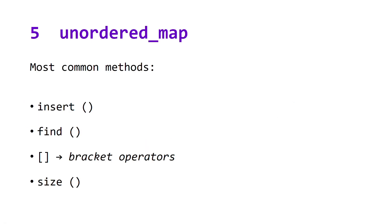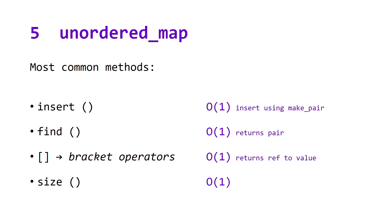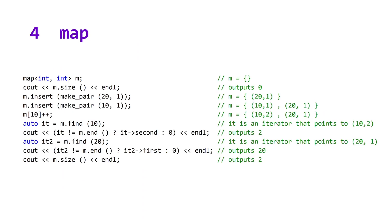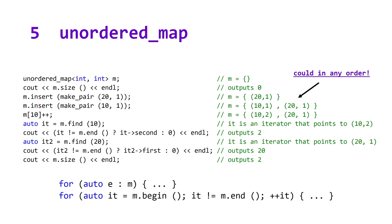Last but not least, data structure number five: unordered map. Unordered map has the same relationship with map that unordered set has with set. It shares the same most common methods, the difference being the runtime of these methods, which for unordered map is constant for all of them. If we compare the map code example to the unordered map code example, the only thing that's different is the declaration of our map. The only difference between unordered map and map is the order in which the pairs are stored.